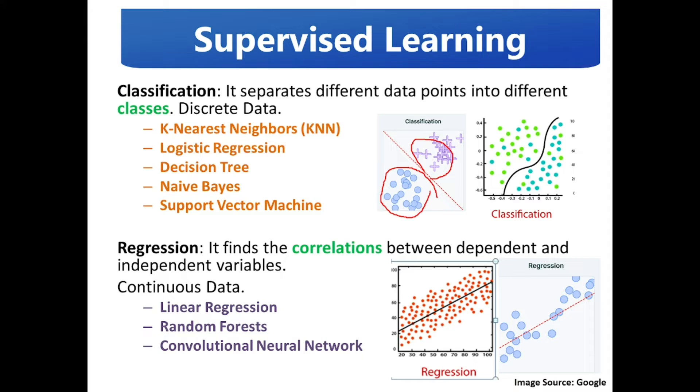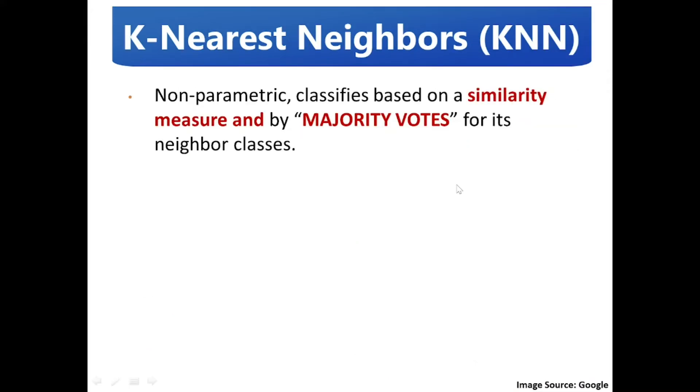Let us have a brief learning on K-Nearest Neighbors. It is a simple non-parametric algorithm that stores all the available cases and classifies new cases based on a similarity measure - that is a distance function - and with majority vote. Since 1970, KNN has been used in statistical estimation and pattern recognition as well.